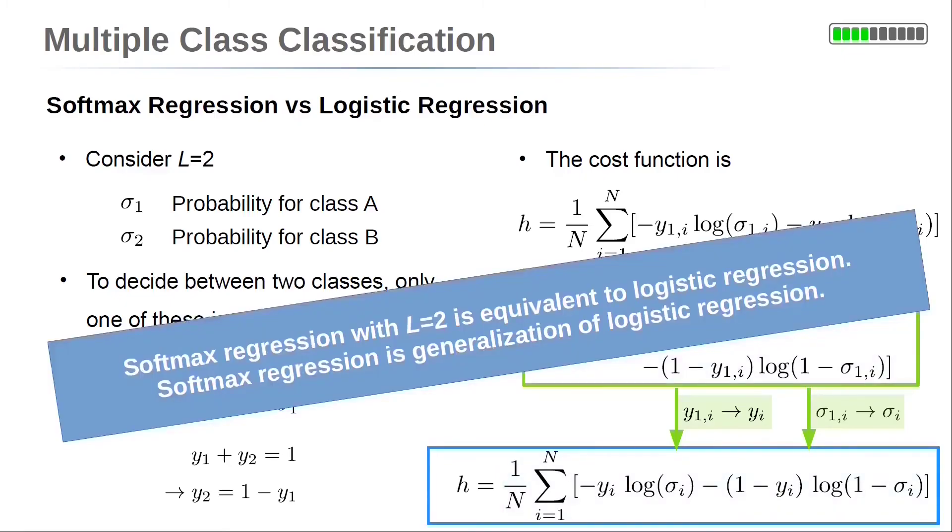So the softmax regression model with L = 2 reduces to logistic regression.